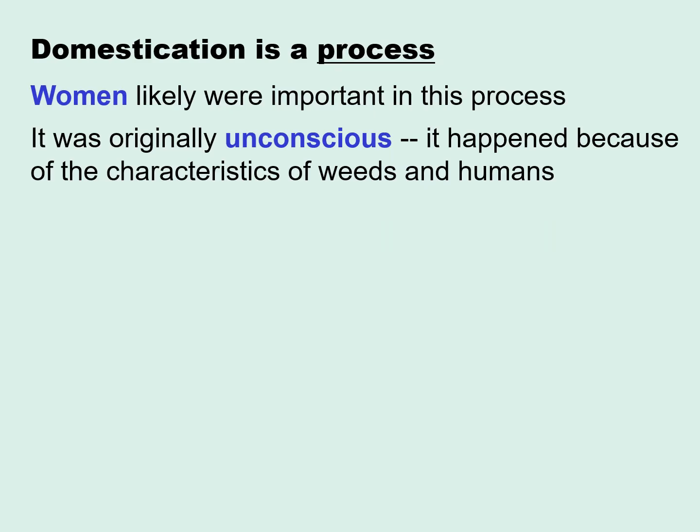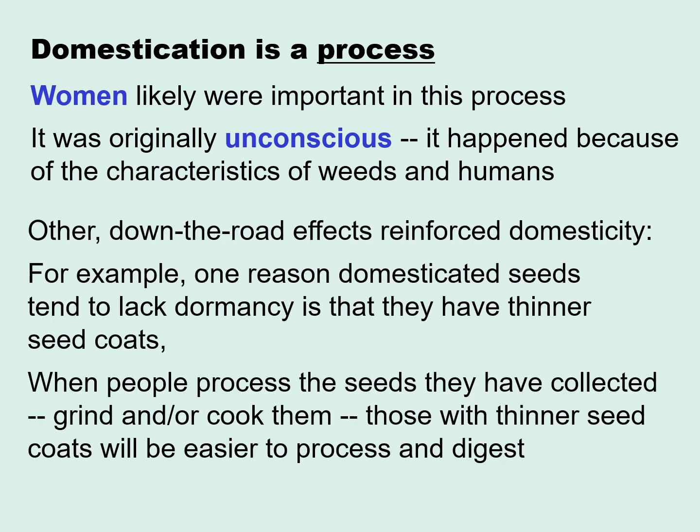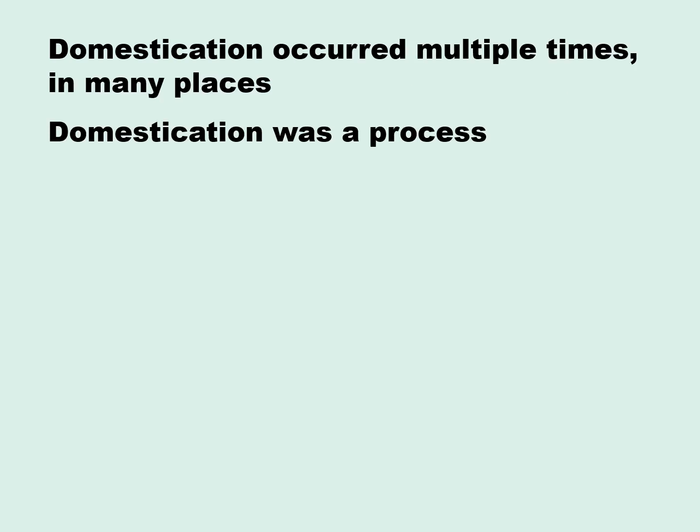Domestication is a process, not an event. Archaeologists have figured that women likely were very important in this process for the domestication of small seeded annuals. Domestication originally was unconscious — people didn't set out to domesticate plants; it never occurred to them. They were simply people being people and weeds being weeds. However, other downstream effects could reinforce domesticity. For example, domesticated seeds tend to lack dormancy because they have thinner seed coats, and if you're hand-grinding seeds with a thinner seed coat, it's a lot less work and you get more nutrition because fewer seeds pass through your digestive system whole. We think domestication occurred multiple times in many places, and again, it was a process.